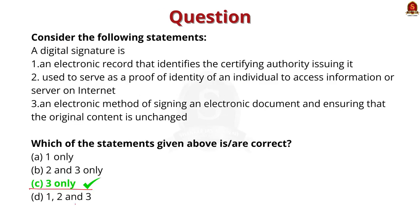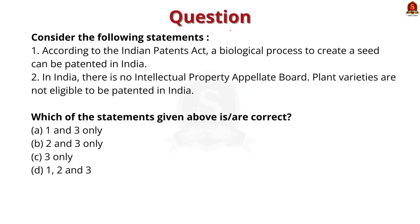Look at this 2019 prelims question. Consider the following statements. According to the Indian Patent Act, a biological process to create seed can be patented in India. In India, there is no intellectual property appellate board. Plant varieties are not eligible to be patented in India. Which of the statements given above are correct? Options: 1 and 3 only, 2 and 3 only, 3 only, or 1 and 2 and 3.